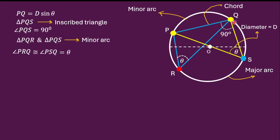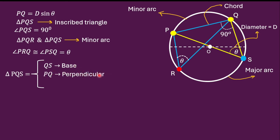We can now solve triangle PQS because we know the length of PS, which equals the diameter, and we know two angles: 90 degrees and theta. Triangle PQS is a right-angle triangle with all necessary information known. Specifically, the side QS corresponds to the base, PQ is the perpendicular, and PS is the hypotenuse of the triangle.